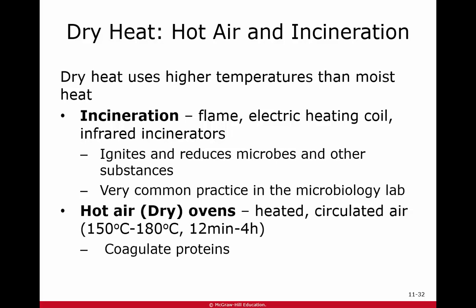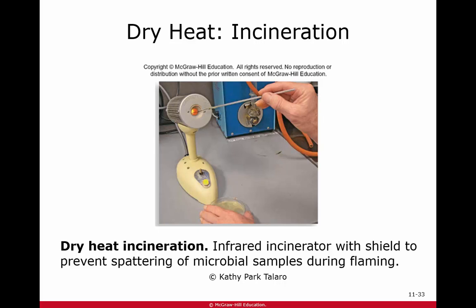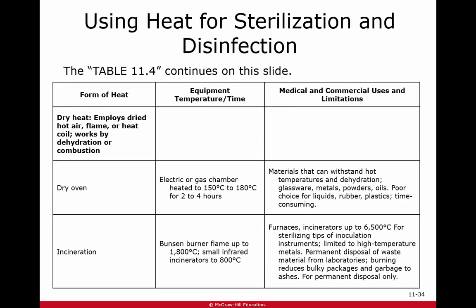If we use dry heat, we've got to use higher temperatures. Incineration uses a flame or an electric heating coil — our incinerators in the room use dry heat. What incineration does is it ignites and reduces the microbes and any other substances into ashes and gas. Hot air ovens — dry ovens, which are usually electric ovens — have heated circulating air with coils that radiate heat within an enclosed compartment, and it will coagulate proteins. Here's another table with the dry oven and incineration details.